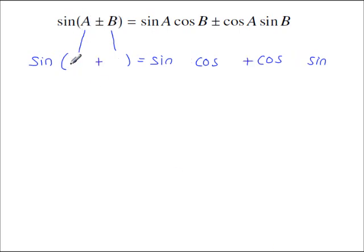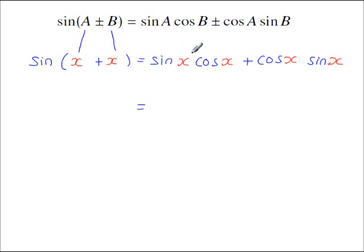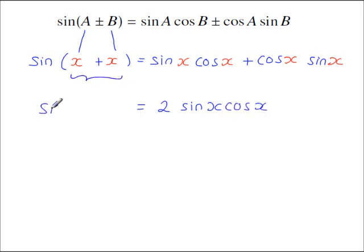If A and B are both the same — so put x in for both — you get sine x times cos x here, and also sine x times cos x on the other side, giving 2 lots of sine x cos x.